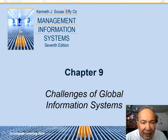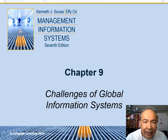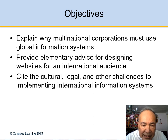In chapter 9, which is a very short chapter, it talks about the challenges of global information systems. This is the global now of the internet. The challenges are about how multinational corporations must use global information systems. Like Walmart is all over the place — they have operations in China, Europe, Canada, Japan, and South America.